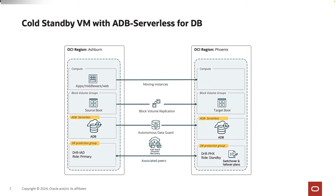This is the architecture we are going to see in our demo. We have two regions: Ashburn is our primary region and Phoenix is the standby region. I've already created all the necessary prerequisites upfront. We have set up an autonomous database in the primary region and created an autonomous Data Guard in the standby region. For the compute, I've created a cross-region replication from the Ashburn region to the Phoenix region for the boot volume.